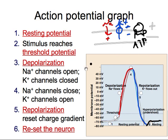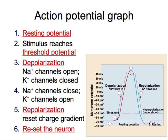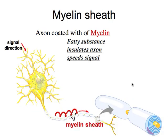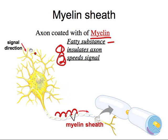Being able to create, describe, and know everything about this graph is going to be very important. The axon is coated with something called myelin. Myelin is a fatty substance that does two things: one, it insulates the axon, and two, it speeds the signal. Here are the dendrites, here's the cell body, and here's the axon coated with this fatty substance.